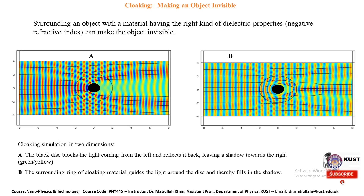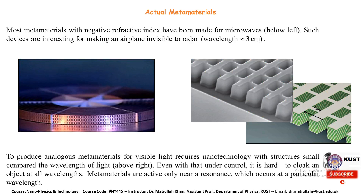In a cloaking simulation in two dimensions: in the first case, a black disc blocks light coming from the left and reflects it back, leaving a shadow on the right. In the second case, a surrounding ring of cloaking material guides light around the disc, thereby filling in the shadow. Most metamaterials with a negative refractive index have been made for microwaves.